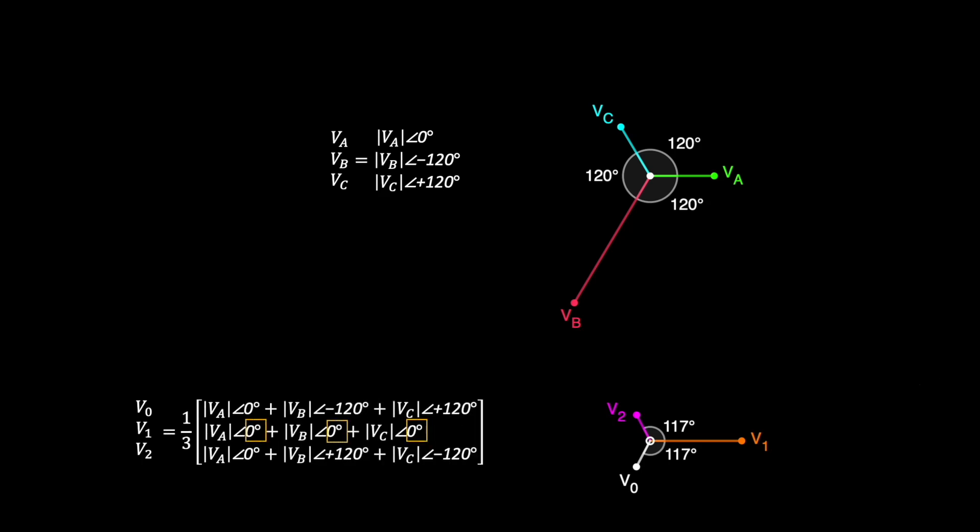The positive sequence vector has no complex angle, but the V0 and V2 vectors do have complex angles that get rotated differently. To get a better look at these 120 degree rotations, I'll convert my phasors into real and imaginary values.